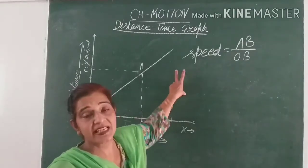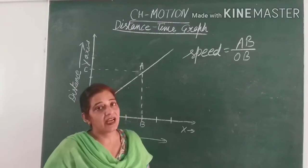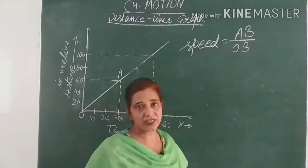So this slope will give us the speed of a moving body which is moving at a uniform speed. Now I will make it more clear to you.